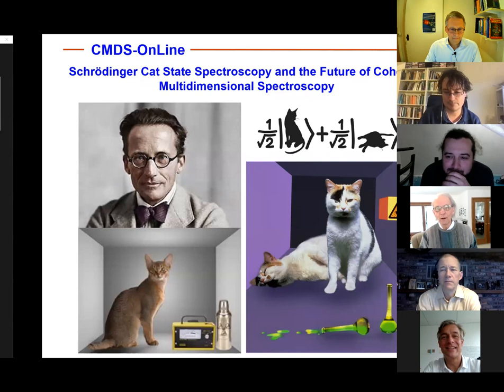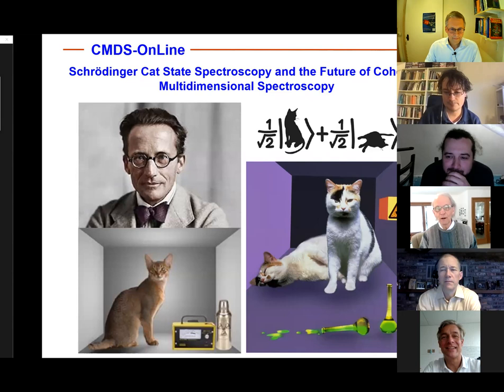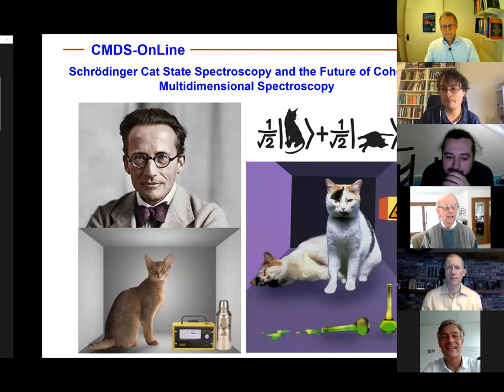I want to tell you about Schrödinger-Cat-State Spectroscopy. The reason for calling these methodologies Schrödinger-Cat Spectroscopies is that they really exemplify the coherent and entanglement attributes of the fully and partially coherent CMDS methods that we all know and love.